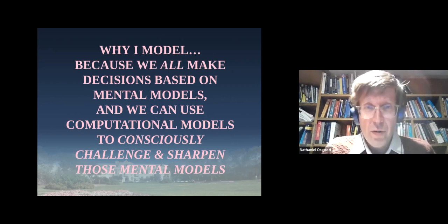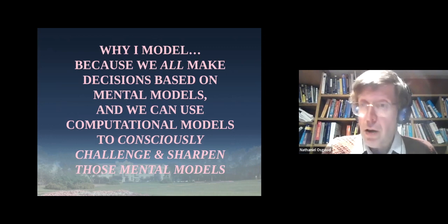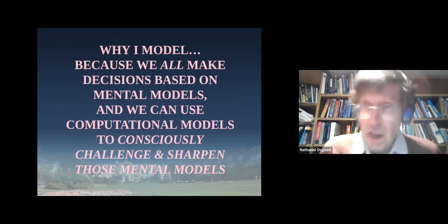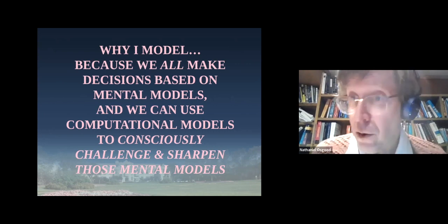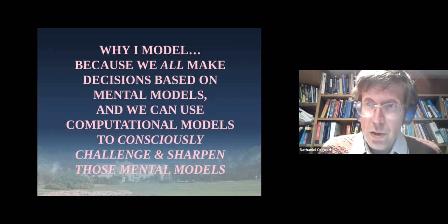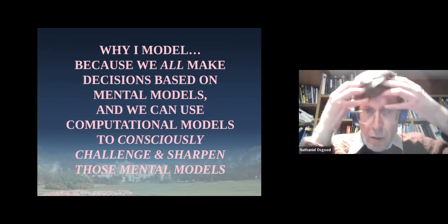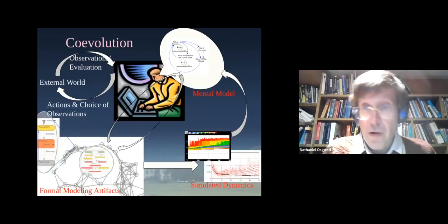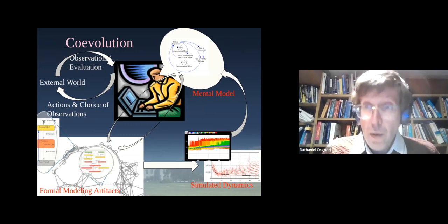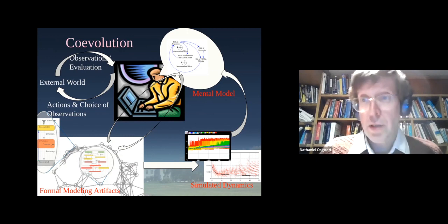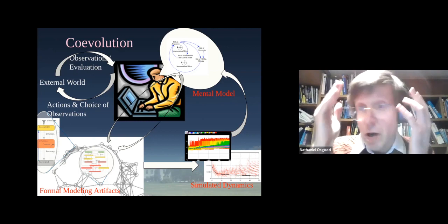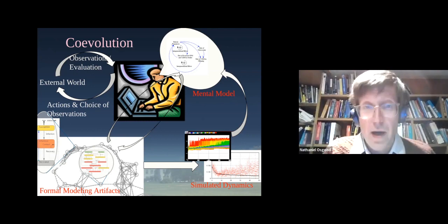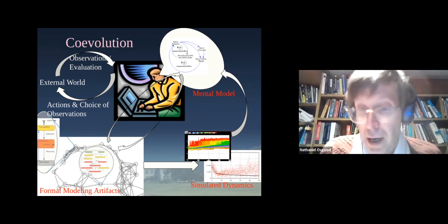I also model because we all make decisions based on models — that may sound like a bold, if not absurd, statement, but we're all modelers. The problem is most of those models are inchoate, hidden — they are our mental models. They tend to be very poor at reasoning through the consequences of assumptions. The question is: are we going to make decisions based on models that are rigorously built on scientific evidence and consistently reasoned about, or are we going to do it based on guesswork and inchoate reasoning in our heads, in ways that can't be critiqued by others as directly?